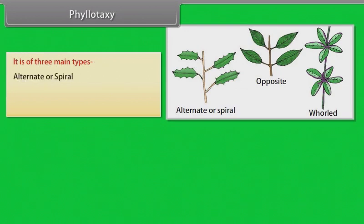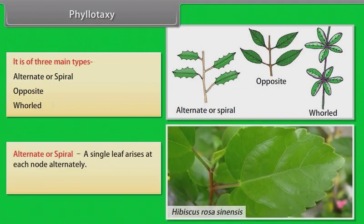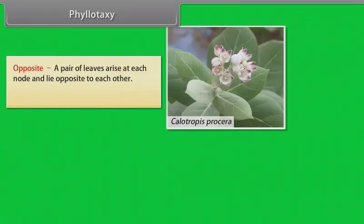Alternate or spiral: A single leaf arises at each node alternately. Example: Hibiscus rosa sinensis. Opposite: A pair of leaves arise at each node and lie opposite to each other. Example: Calotropis Procera.